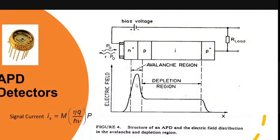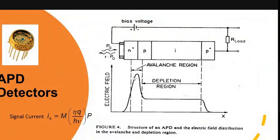The newly created carriers are also accelerated by the high electric field, gaining enough energy to cause further impact ionization. This impact ionization effect is called the avalanche effect. Up to a certain threshold point, the avalanche effect does not cause current to flow, but after reaching the threshold point, the charge carriers increase drastically — that drastic increase is the avalanche effect.